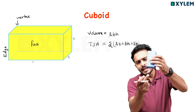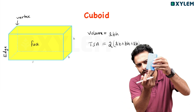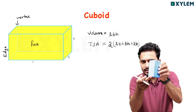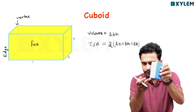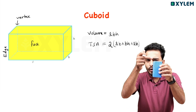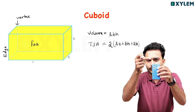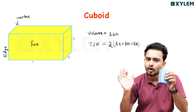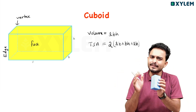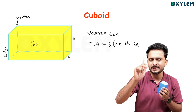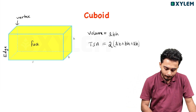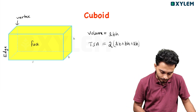This is the length. This is the breadth. This is the height. L, B, H — Length, Breadth, Height. L, B, H.